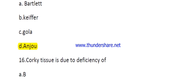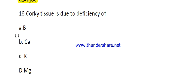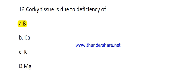Question number sixteen: corky tissue in pear is due to the deficiency of boron, calcium, potassium, or magnesium? The right answer is boron.